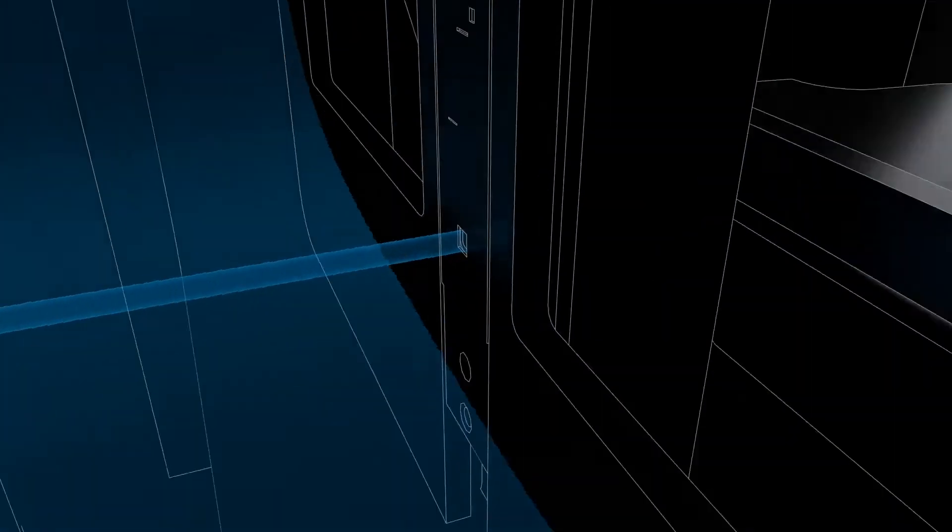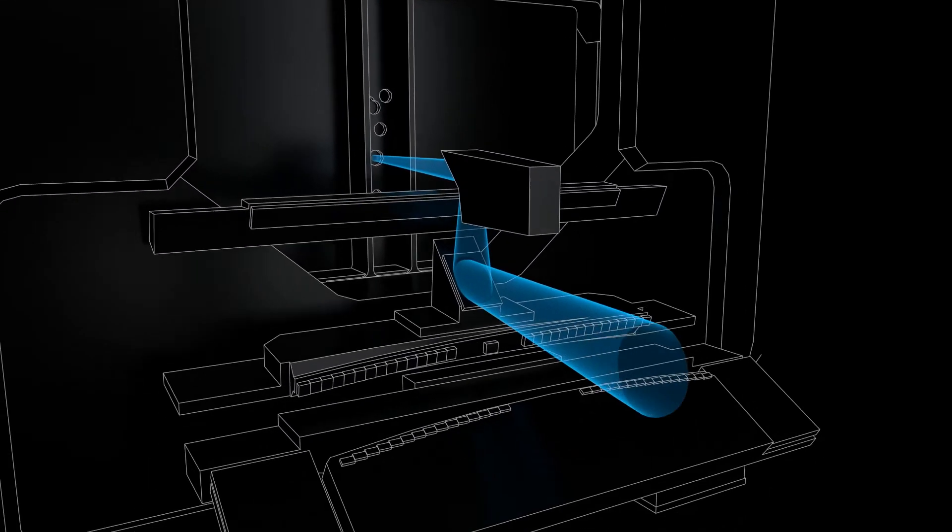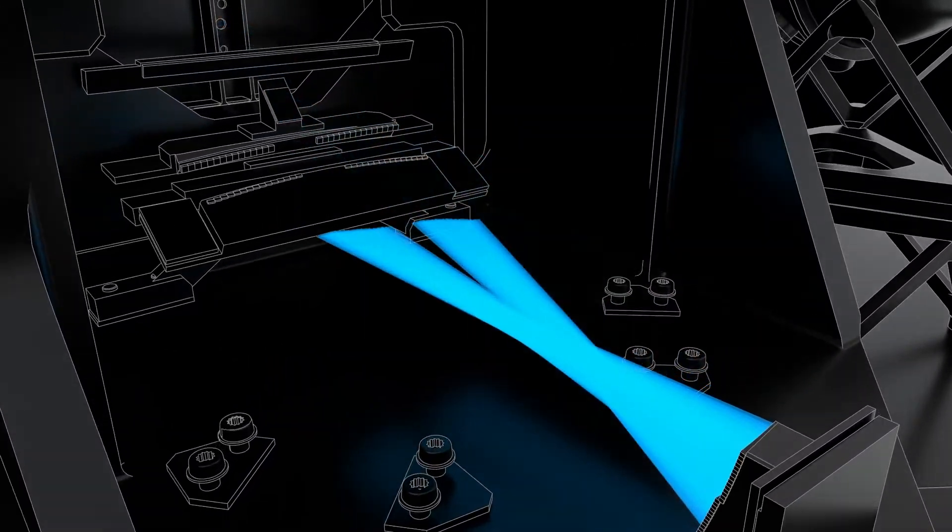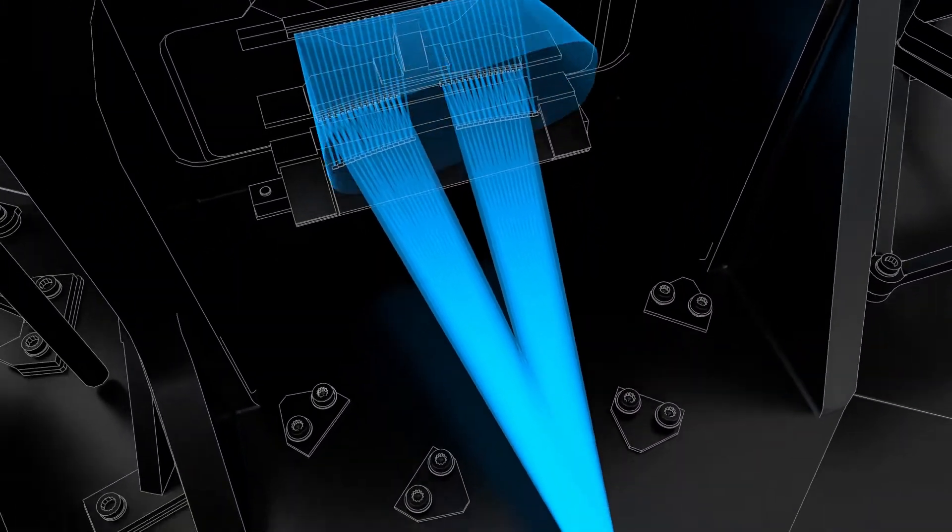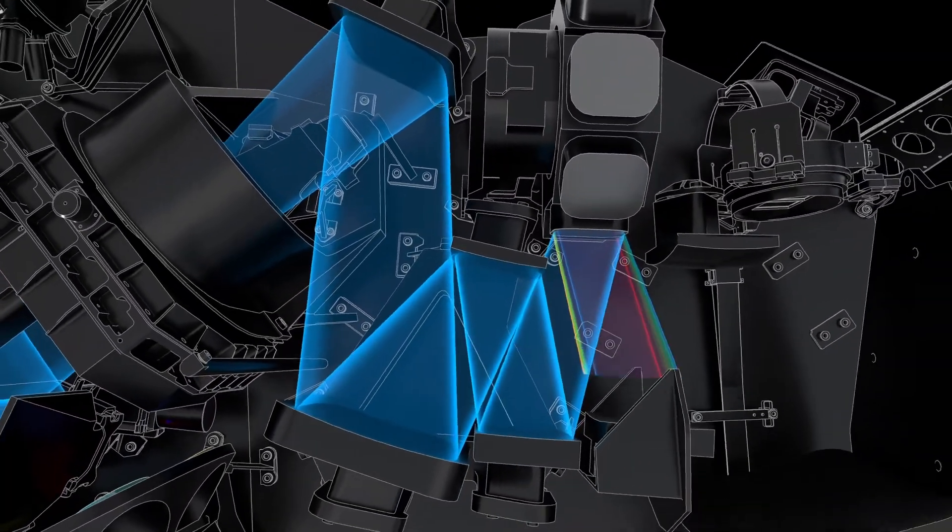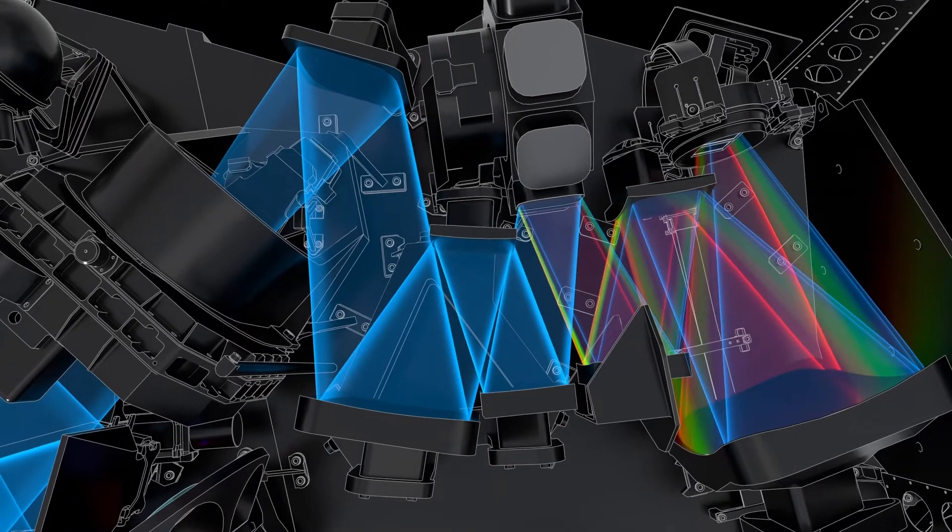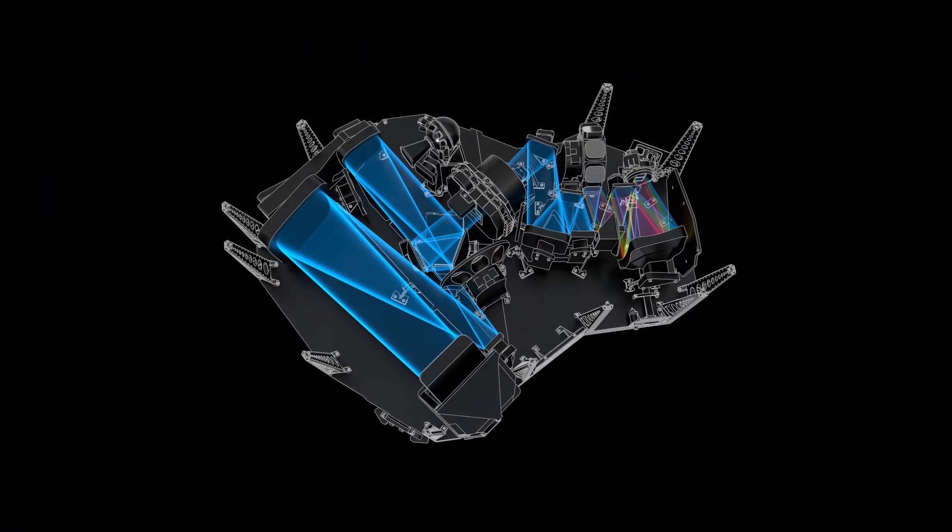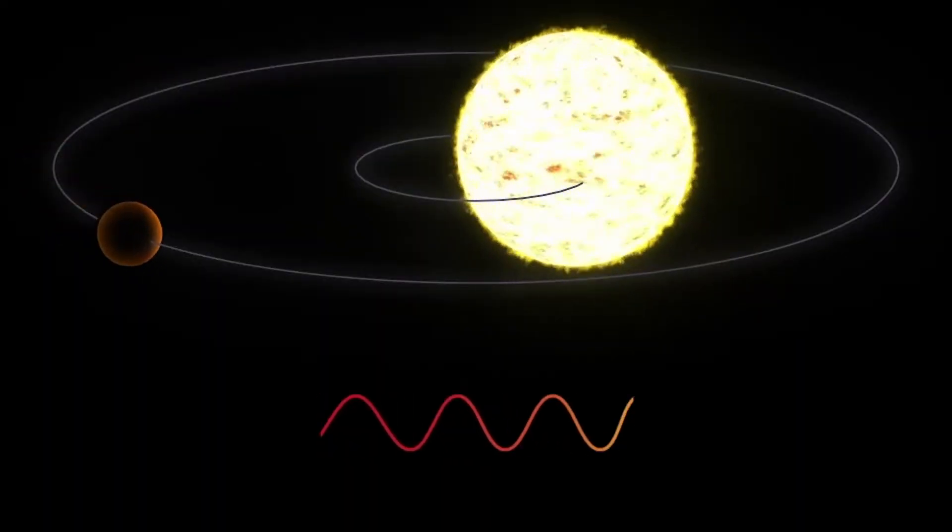Essentially, the radial velocity method consists not of looking for signs of planets themselves, but in observing a star for signs of movement. This is deduced by using a spectrometer to measure the way in which the star's spectral lines are displaced due to the Doppler effect. For example, how light from the star is shifted towards the red or blue end of the spectrum, redshift or blueshift.